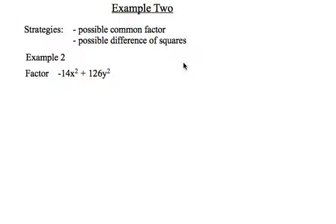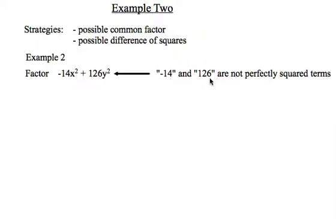Example 2. Again I'd like to look for the possibility of a common factor and because it's two terms I'd like to look for the possibility of a difference of squares even though the way it's written right now it has an addition sign here.